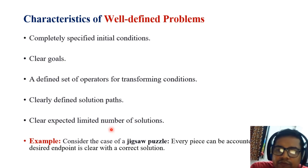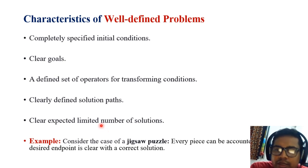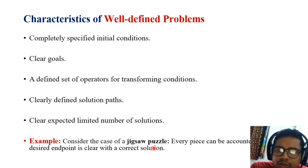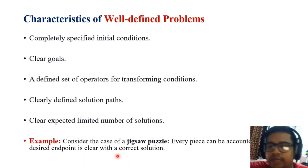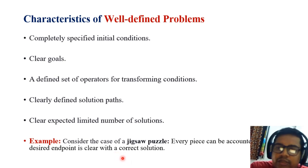An example of a well-defined problem is the jigsaw puzzle, which we have played in childhood. Every jigsaw puzzle has pieces that, if accumulated in the proper way, give you a complete picture. Each part must be placed in its proper place — if you do not place a particular piece in the right place, you cannot get the picture. It is a correct example of a well-defined problem that has a particular, sometimes unique, solution with a finite number of solutions.